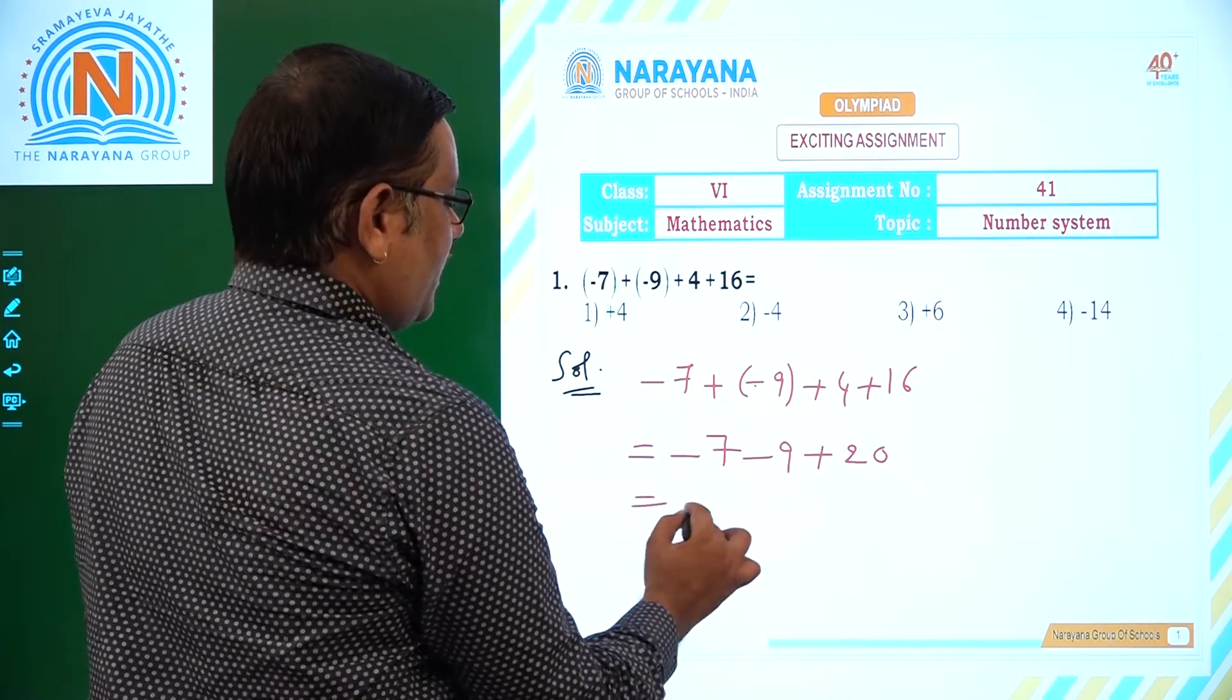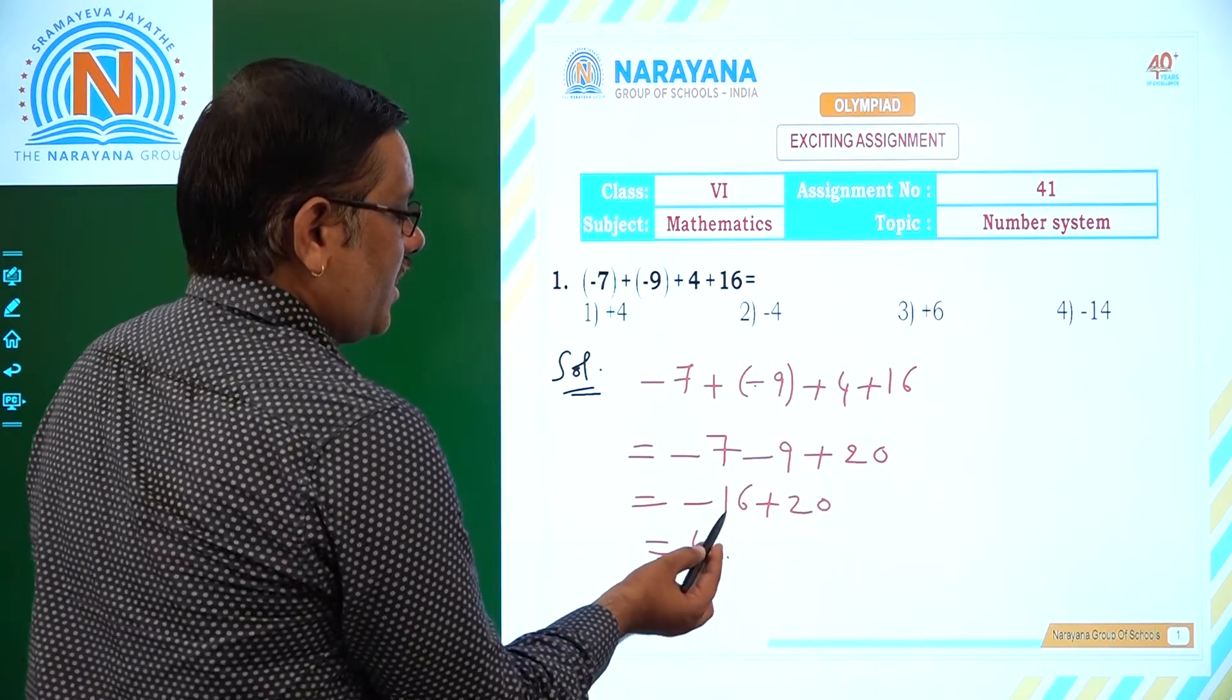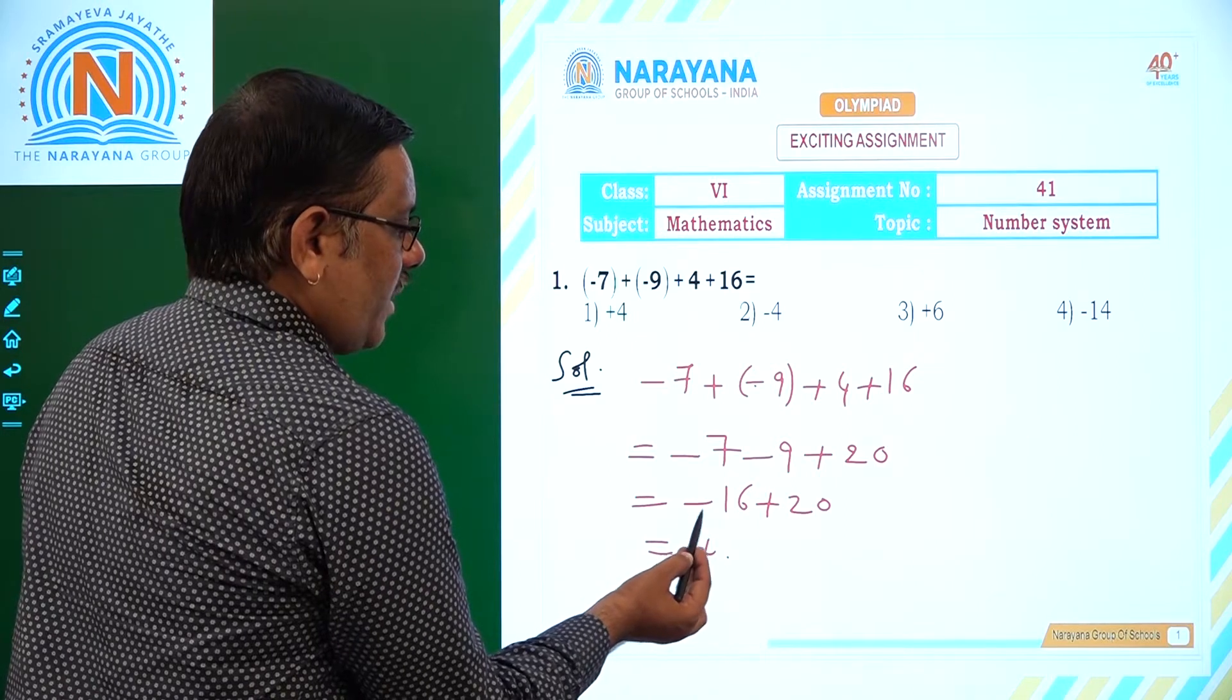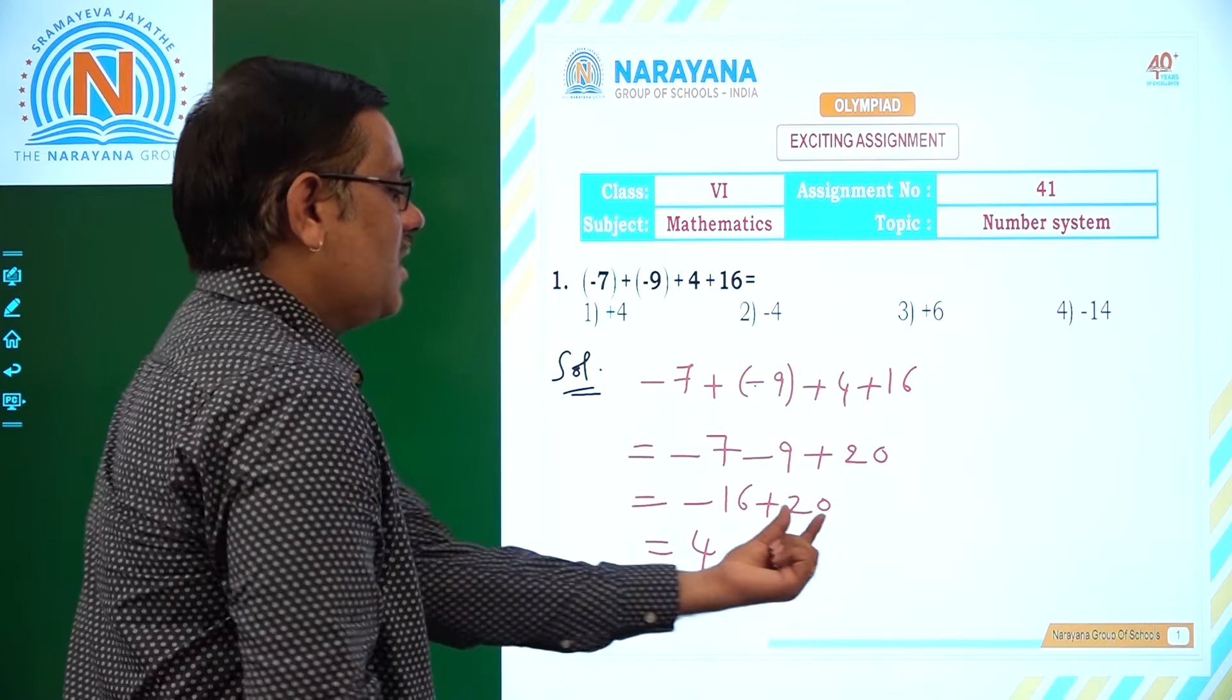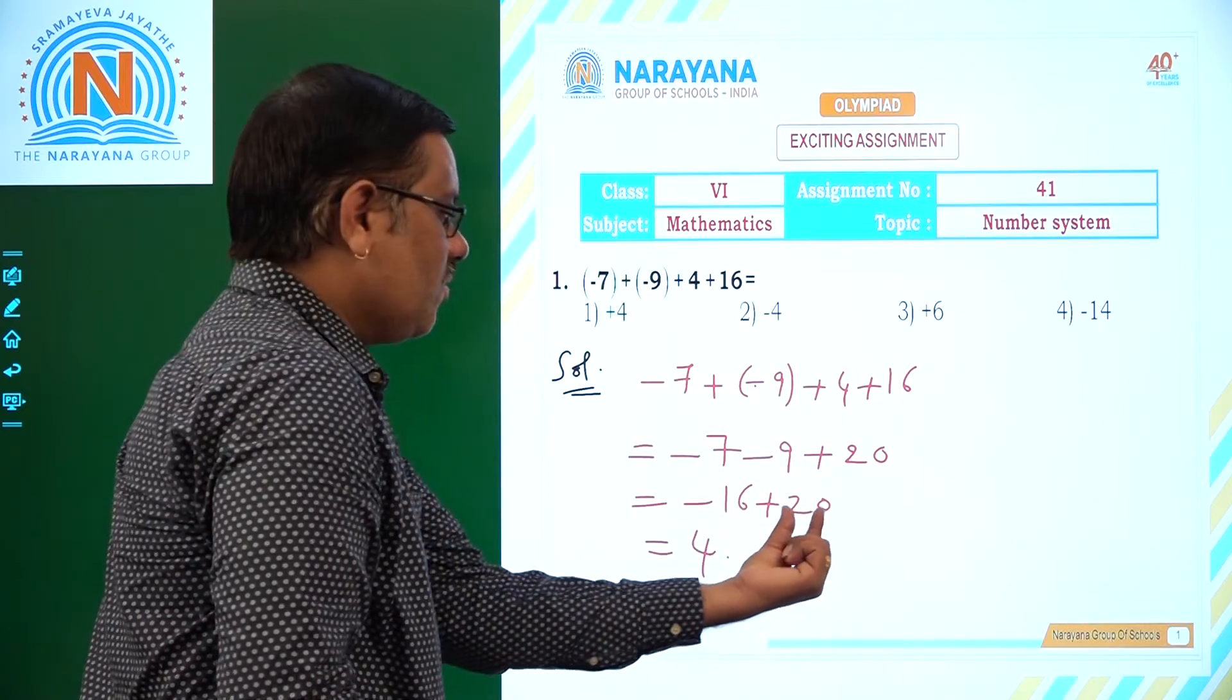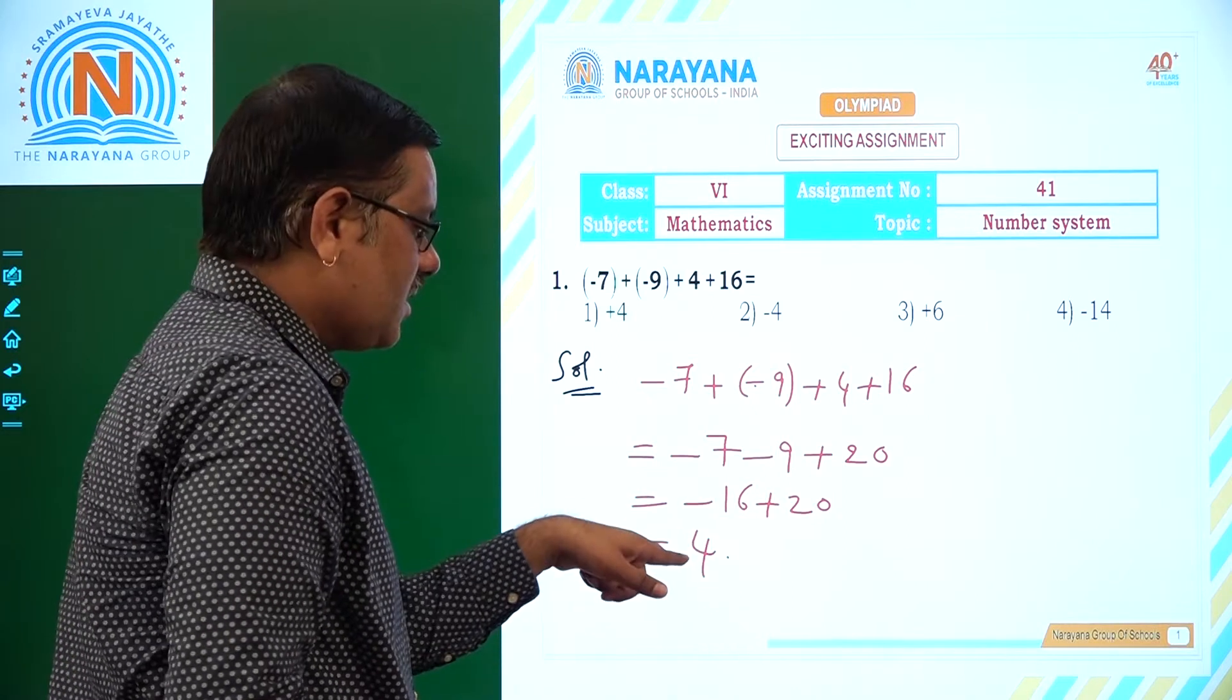So, -7 - 9, that is -16 + 20. -16 + 20 is nothing but +4, because whenever you have different signs, minus and plus, subtract one from the other. One in the sense, the larger value and the smaller value. So, 20, 16 difference is 4, but 20 has positive sign. So answer is +4.